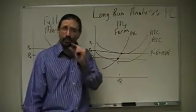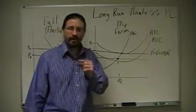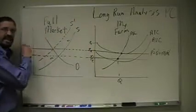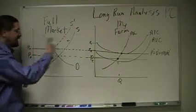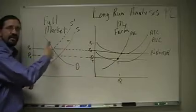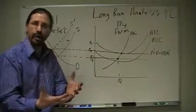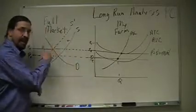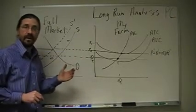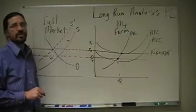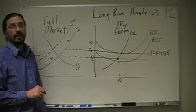And the key is remembering the reason why you have long run no profit is the easy entry and exit. It's easy for supply to shift left and right. Granted, it has to happen in large quantities, but it will happen when you're seeing these losses or gains. And that's what evens out the market so that there's not going to be any profit in the long run.